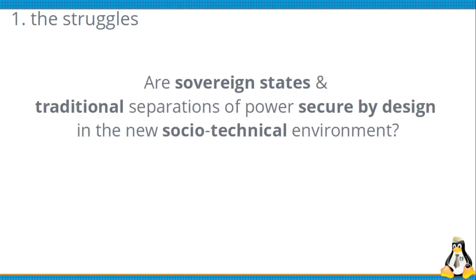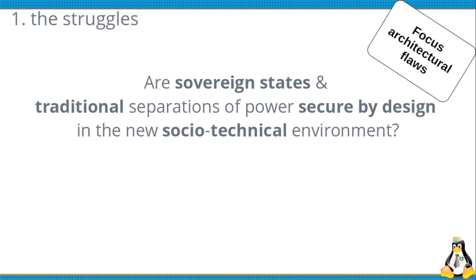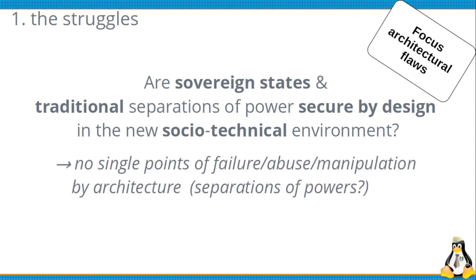So are sovereign states in their traditional separations of powers secure by design in this new environment? Secure by design is a concept from software engineering that shifts the focus from bugs and errors to the architecture, asking whether those bugs are symptoms of an architectural flaw — so that fighting the bugs doesn't make a difference. The first issue is we have to avoid single points of failure, abuse, and manipulation by architecture.